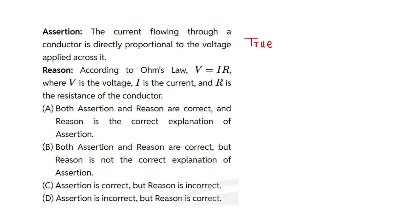to I multiplied by R, where V is the voltage, I is the current, and R is the resistance of the conductor. Absolutely right.